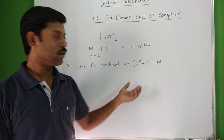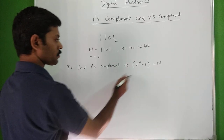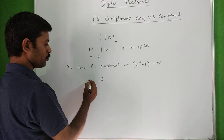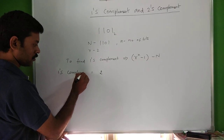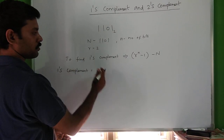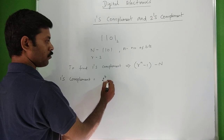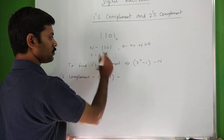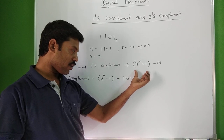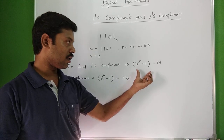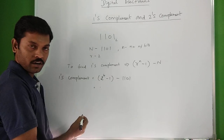So the 1's complement formula: R is 2, so we have 2 to the power of n. Since the base is 2 and the number of bits n is 4, we calculate 2 to the power of 4 minus 1 minus the binary number 1 1 0 1. So 2 to the power of 4 is 16, and 16 minus 1 equals 15.